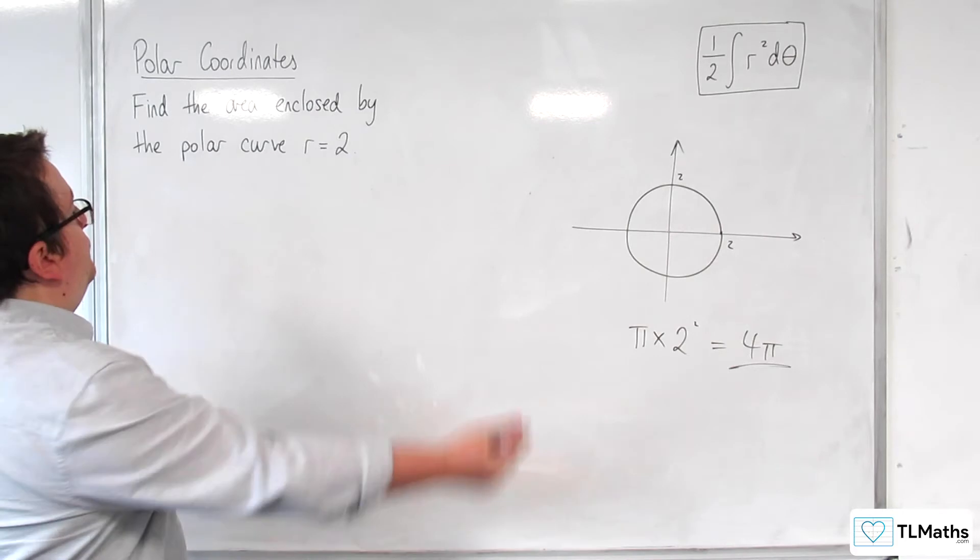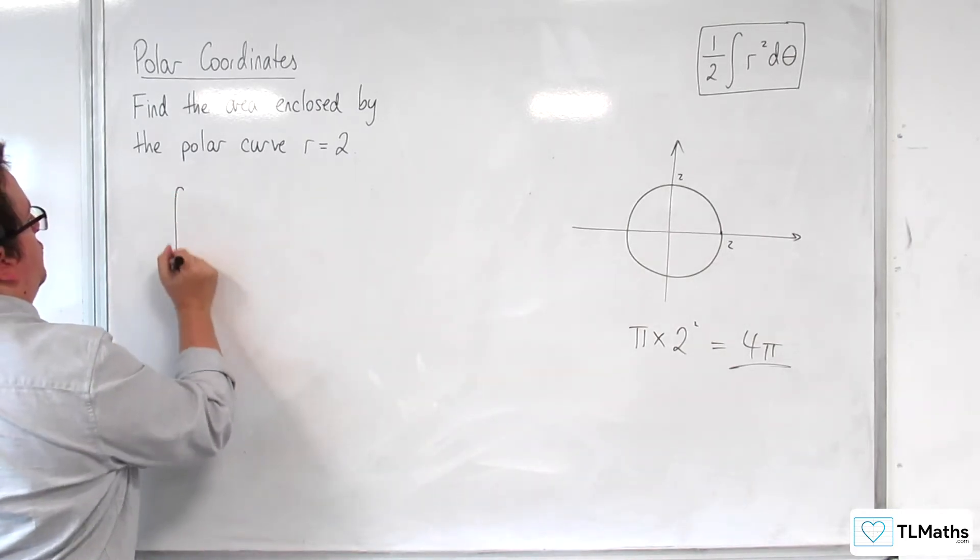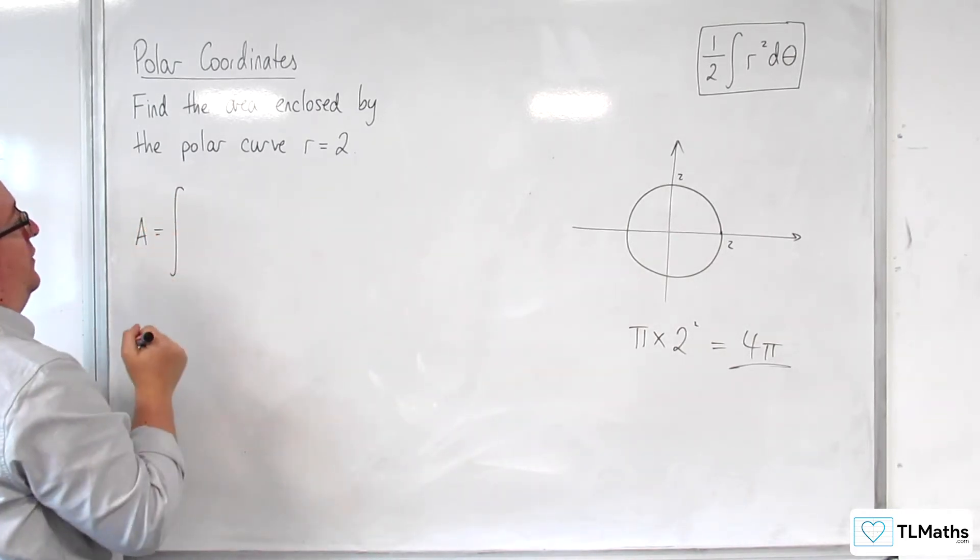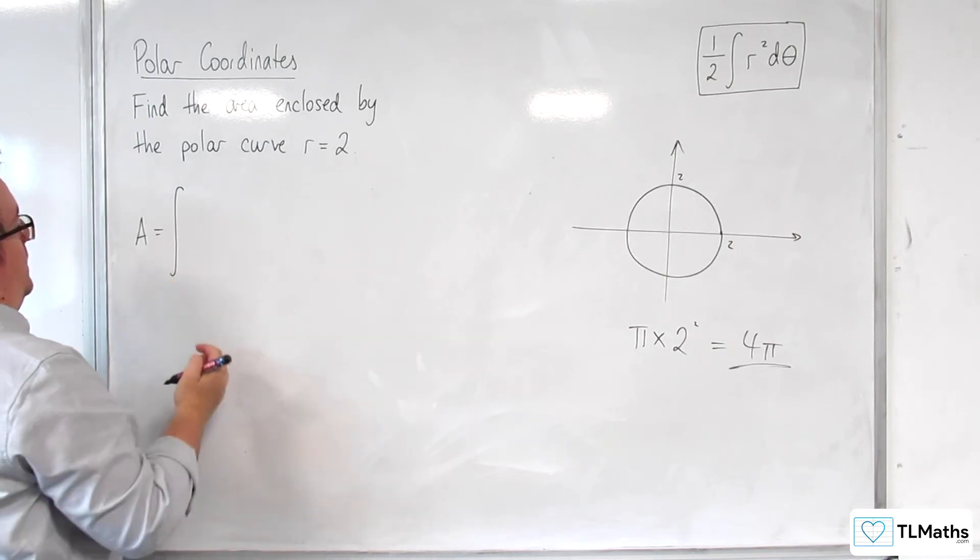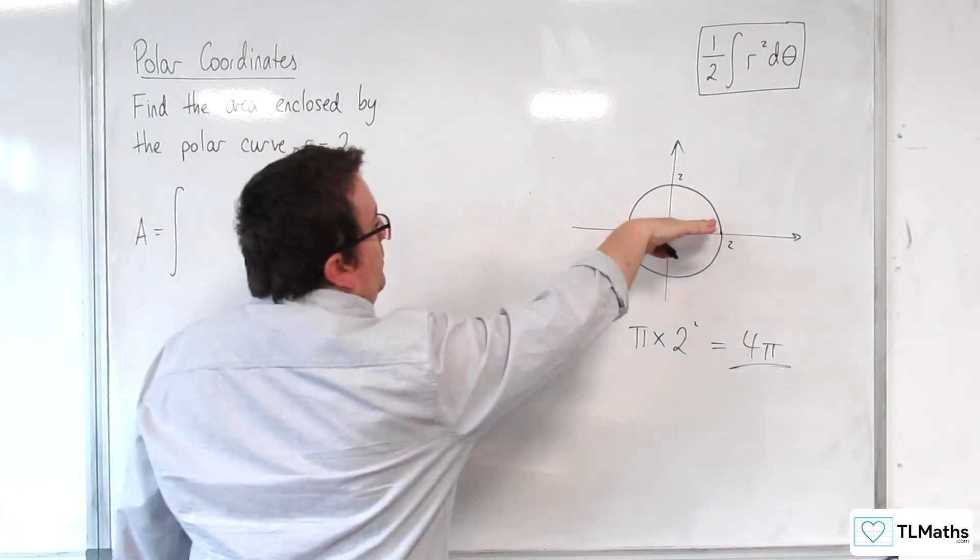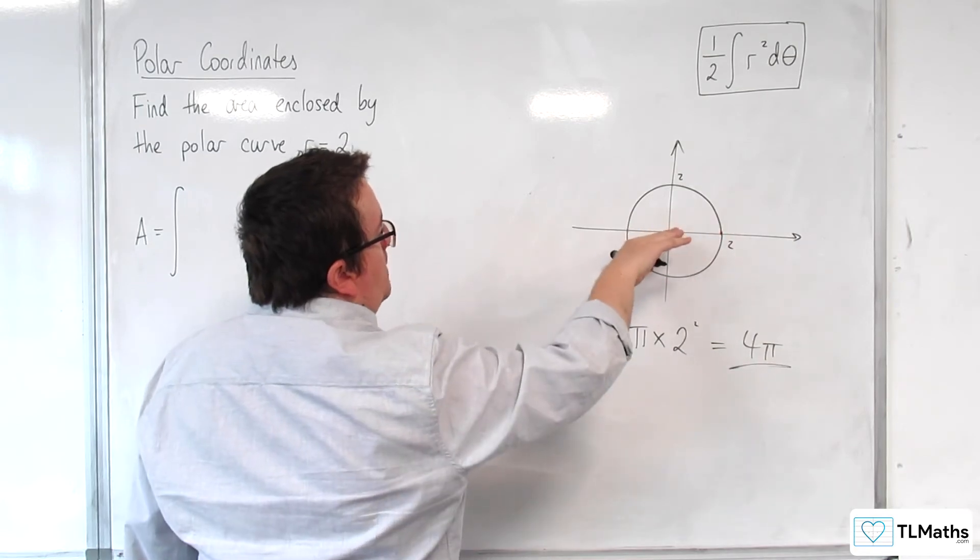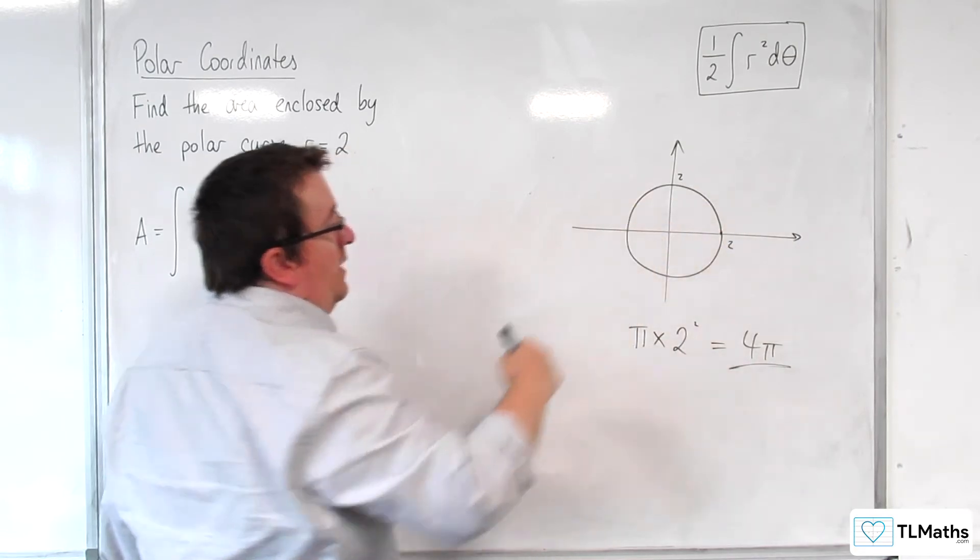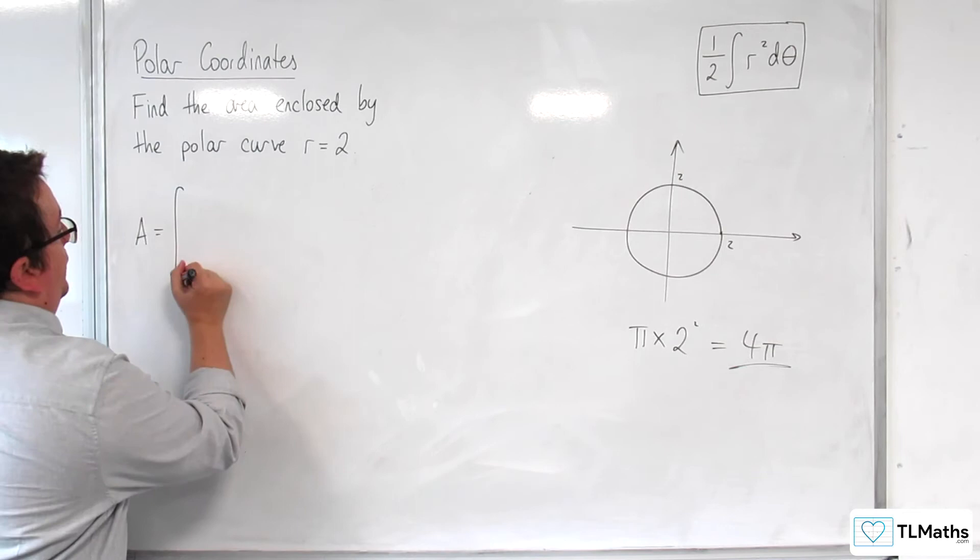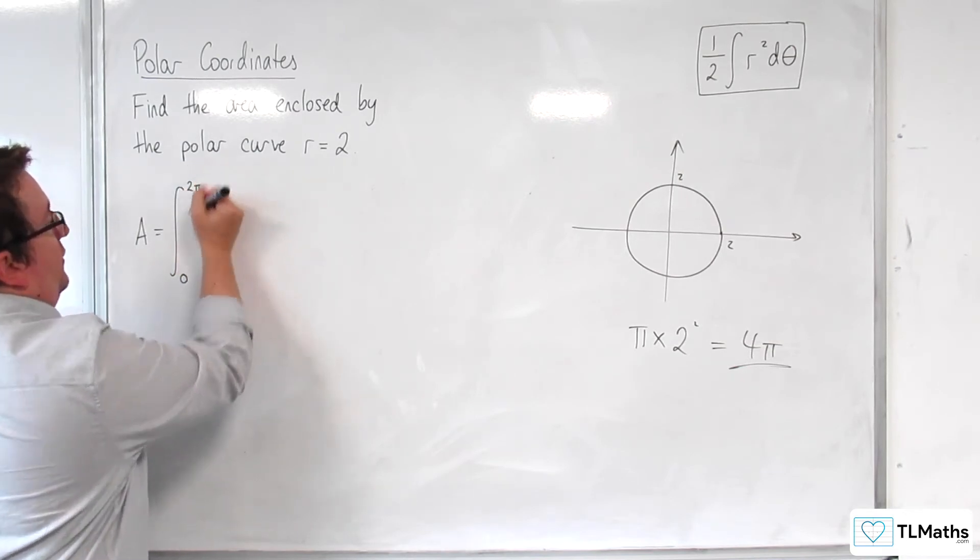So we are going to be integrating. The area we're looking for is the integral between, now we can go from 0 all the way around to 2 pi or we could do from minus pi around to pi. It doesn't matter, we're going to go 0 to 2 pi because it's just easier to substitute in.